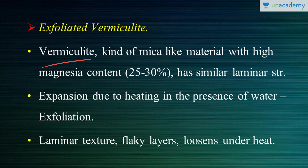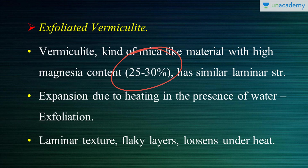So, what is vermiculite? Vermiculite is a mica-like material — it's a derivative of mica, or a type of mica — with a high magnesia content of 25 to 30 percent. It has a similar laminar structure to ordinary mica.